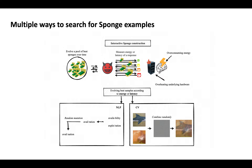Now that it's clear how an adversary may cause performance degradation, how do we find such sponge examples efficiently? We make use of an evolutionary algorithm, optimizing over either energy or latency to perform the attack. Because of the gradient-free nature of the genetic algorithm, we can perform our attack in a fully black-box way. We start off with random data points, throw them at the model, measure latency or energy, and combine the best-performing samples together. Over time, this procedure leads to discovery of very potent sponge examples.